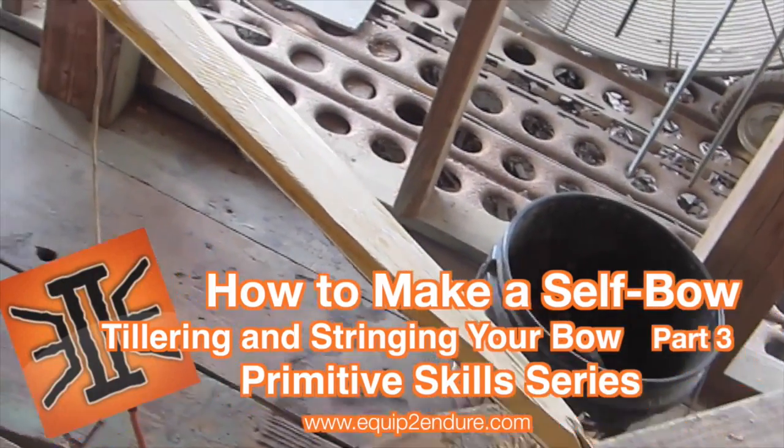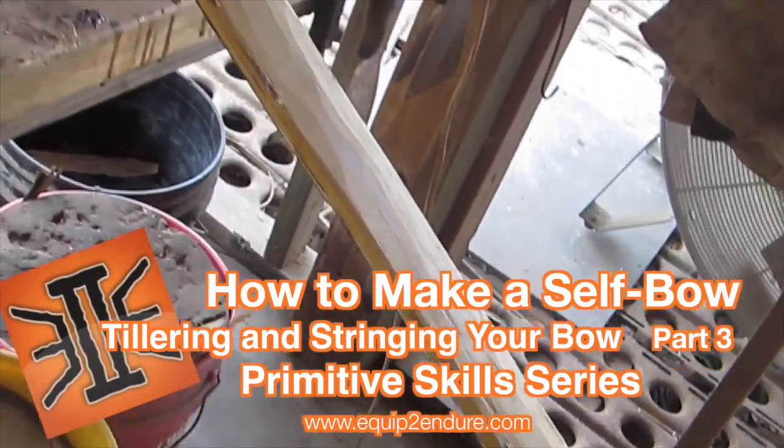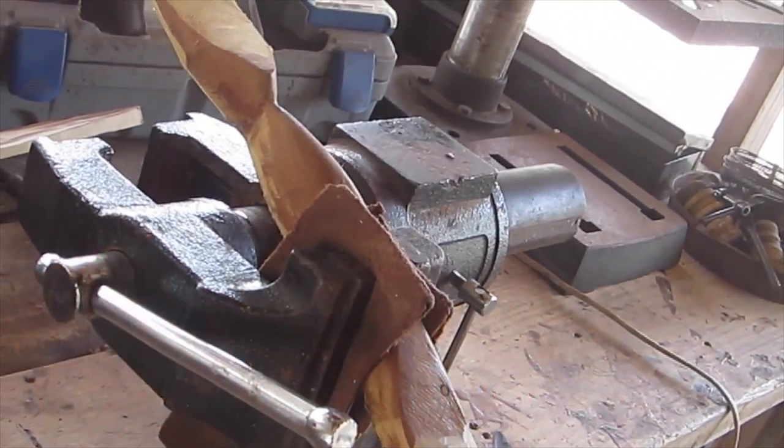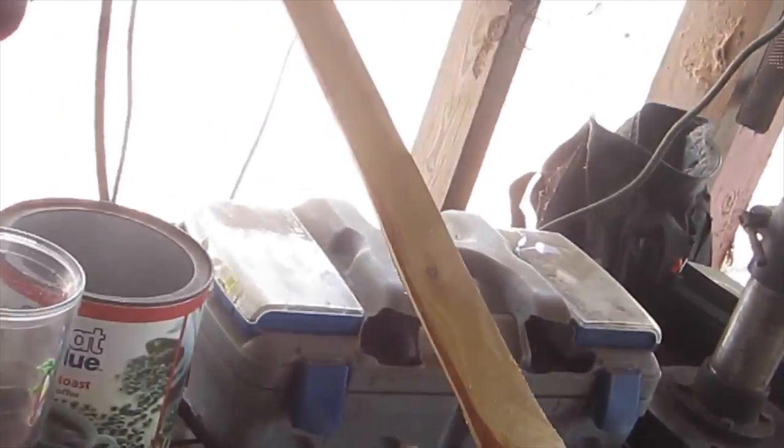Here is that Osage flatbow that I've been working on. I've got it in the vise. On this occasion I'm using a vise because I'm going into final tiller. Up until now I've been into pre-tiller.